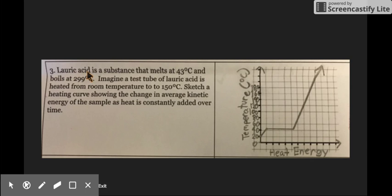Here's this interesting substance called lauric acid. It melts at 43 Celsius and boils at 299 Celsius. So if you were to heat up lauric acid to a temperature of 150 Celsius, you would not reach the boiling point, but it would melt.